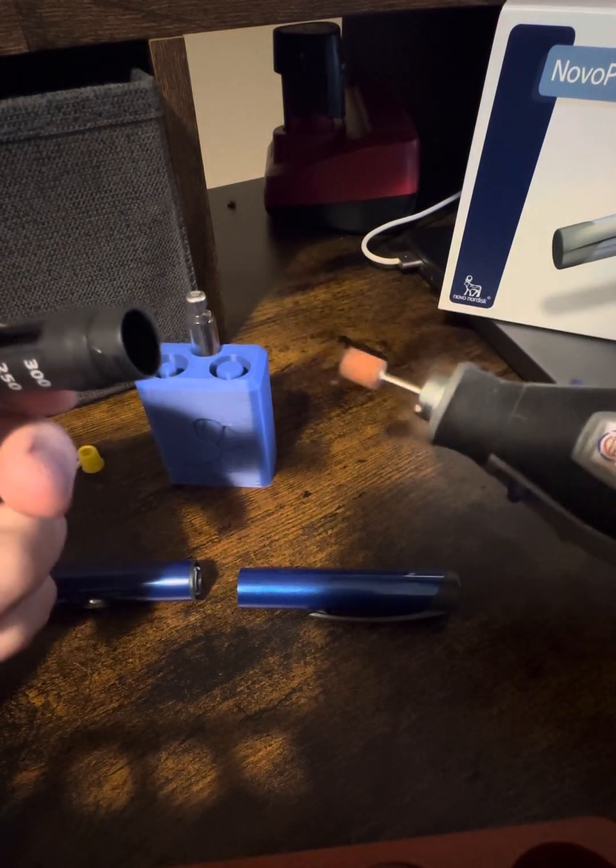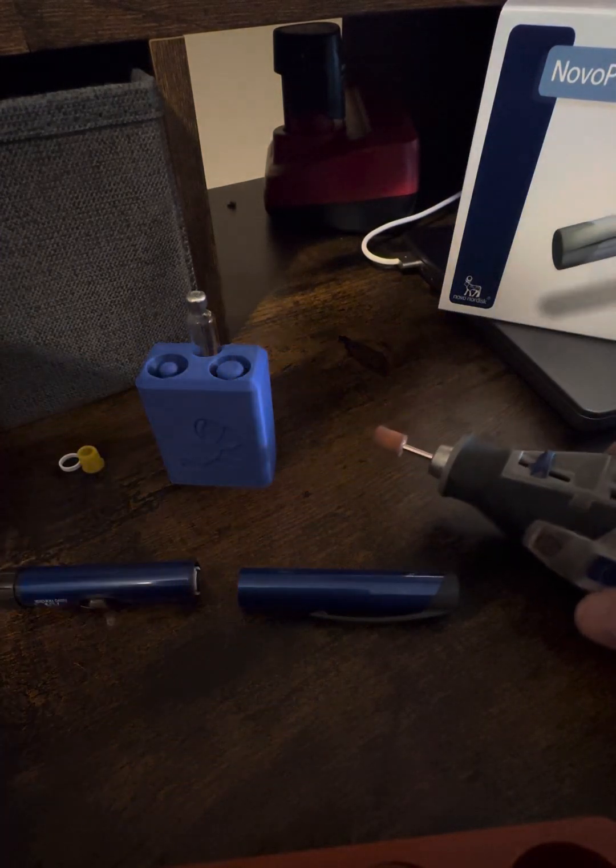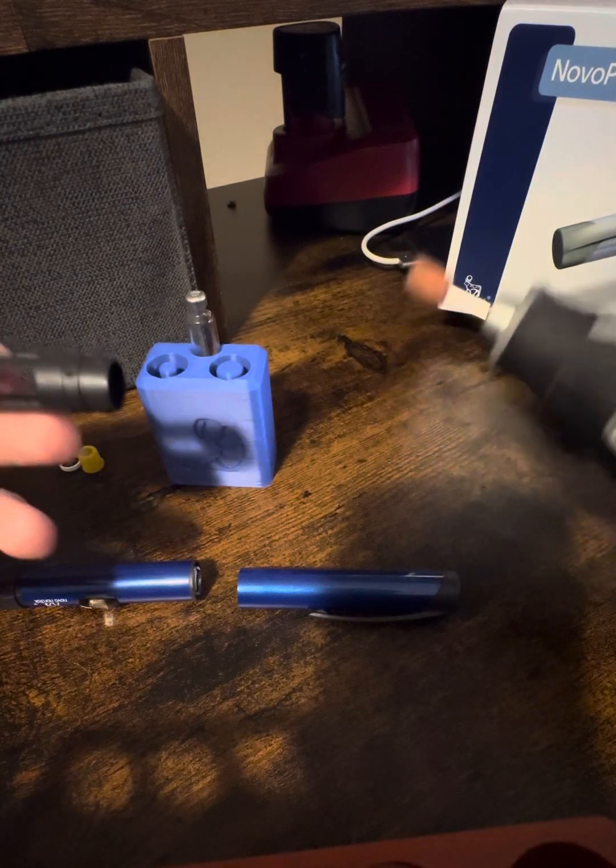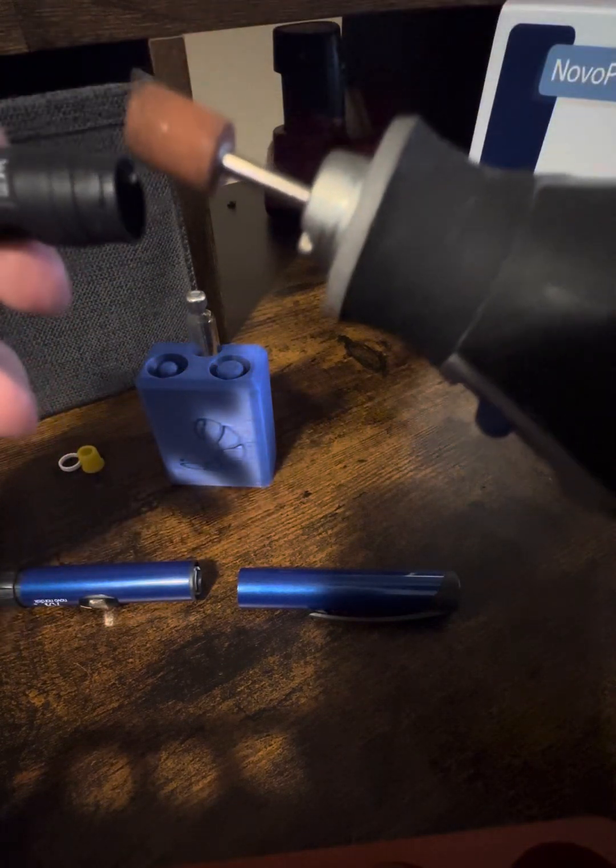You can use a nail file. I'm gonna use a Dremel bit because this is really fast, it'll take me about 30 seconds. And then you'll be able to slide that cartridge in and get it working for you.